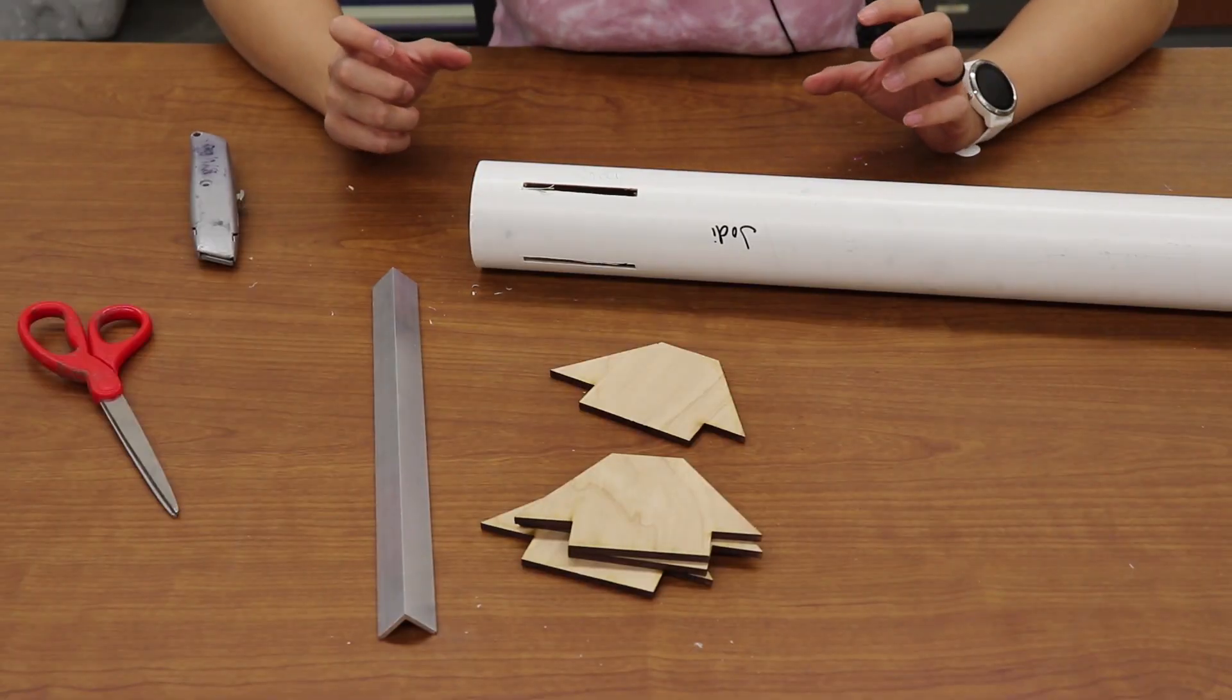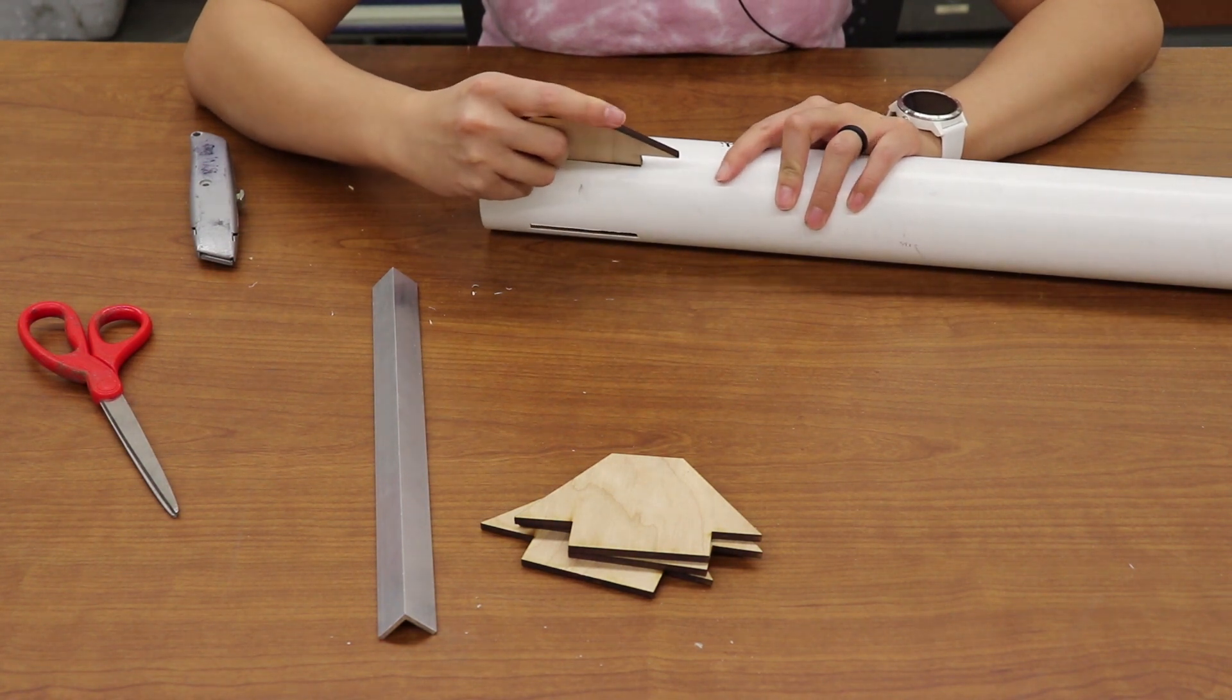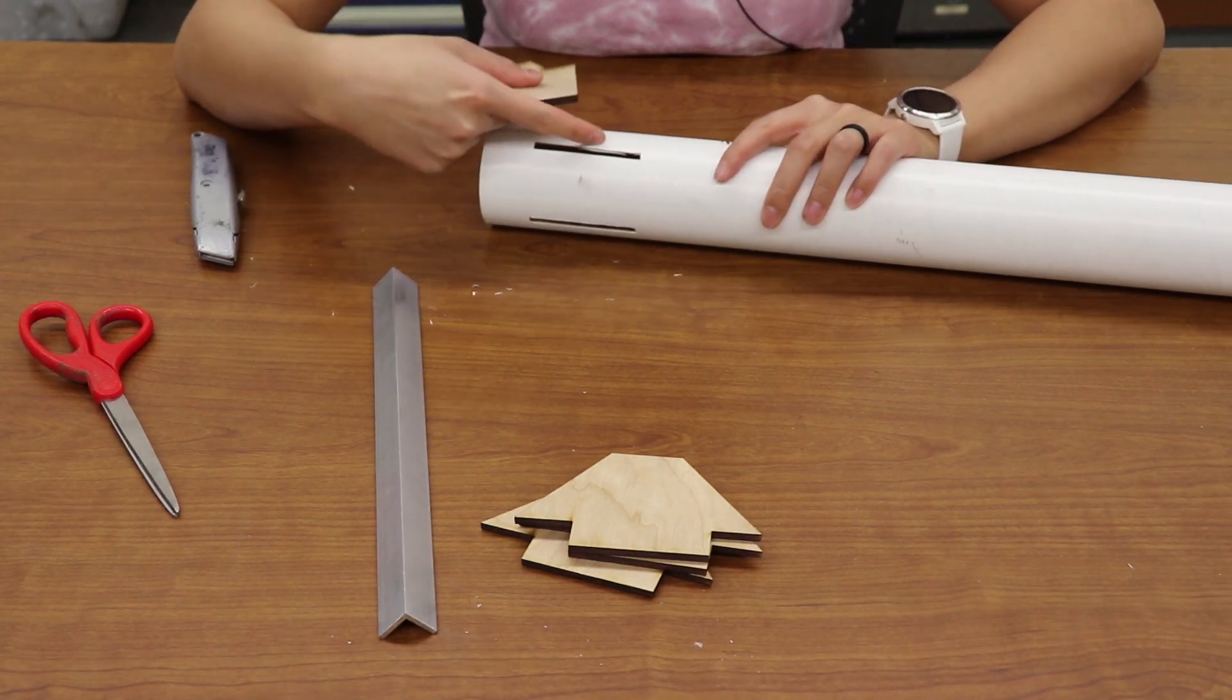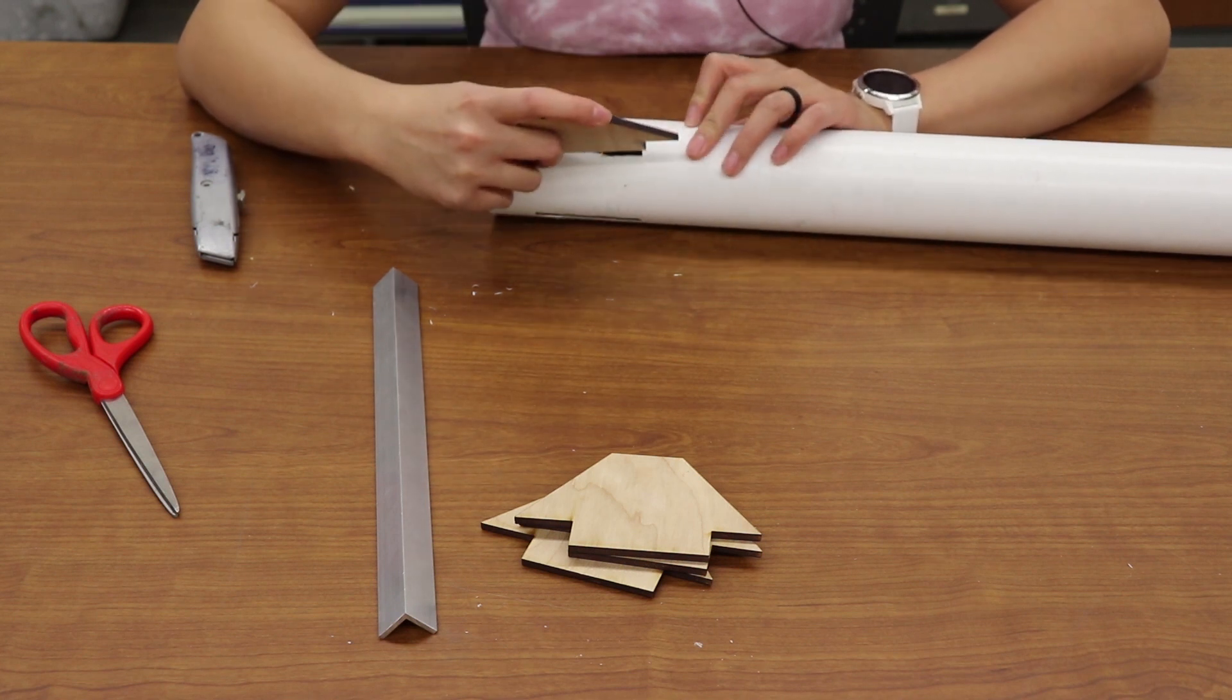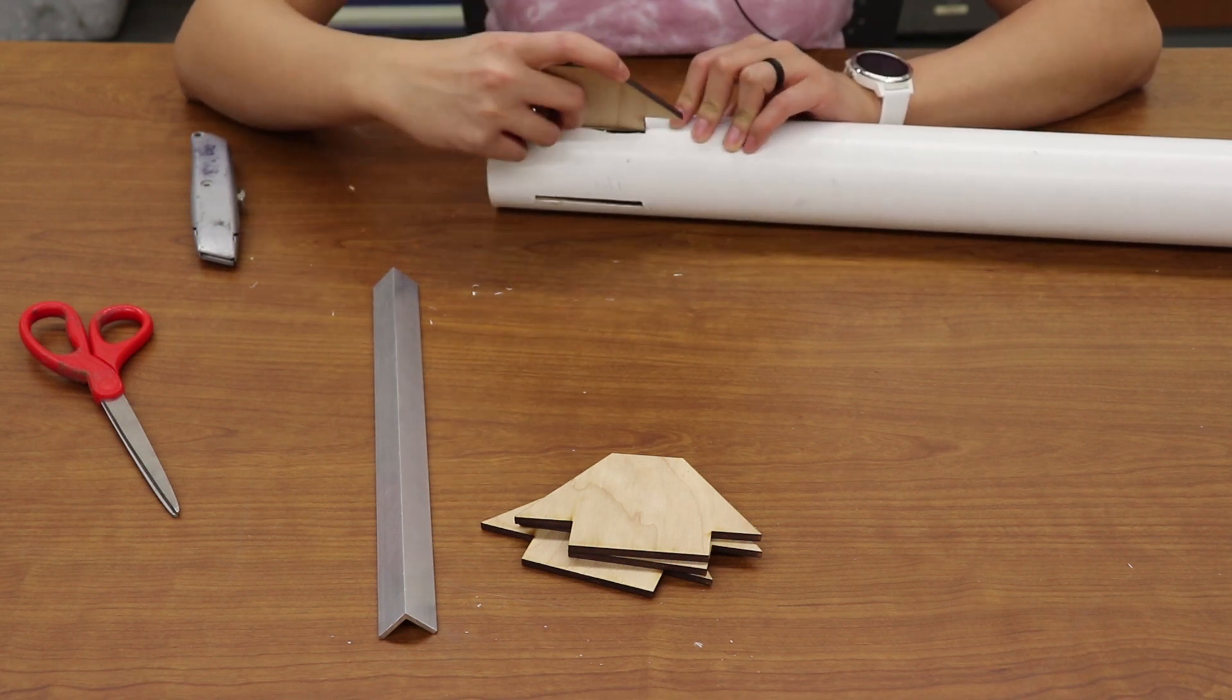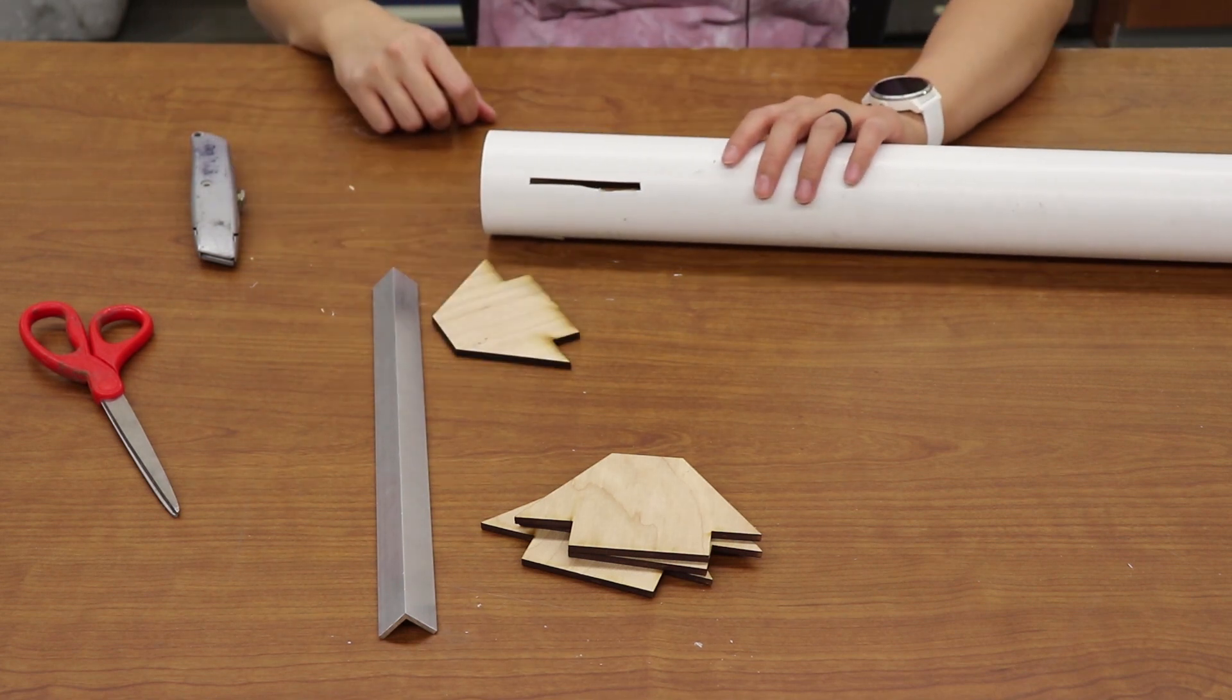So once you have all of your fin slots cut out, you want to make sure that your fins will actually fit into the fin slots. So the way I cut them they're a little tight and they won't slide through. So what I'm going to do is just shave off a little bit of the fin slot until the fins sit in them snug.